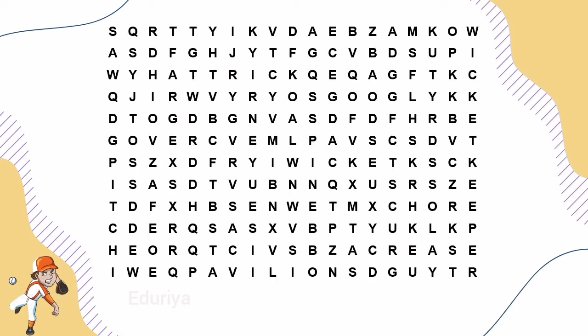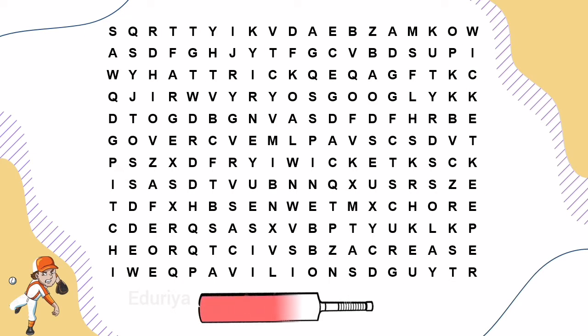When a bowler takes three wickets with consecutive deliveries, this is known as Hat Trick.